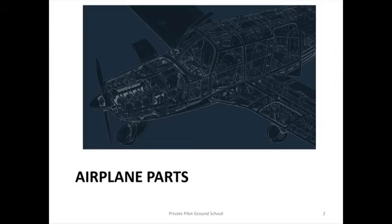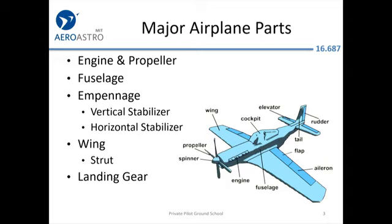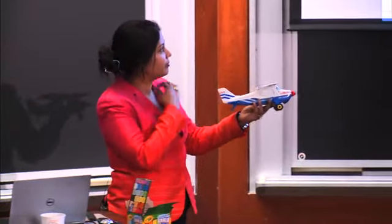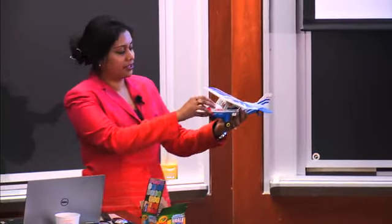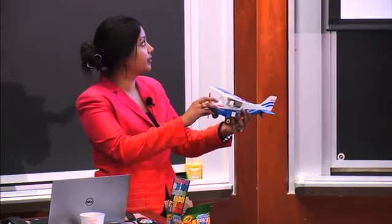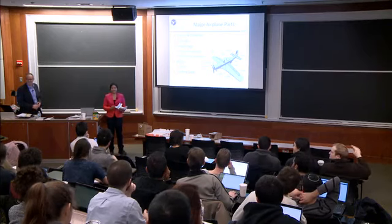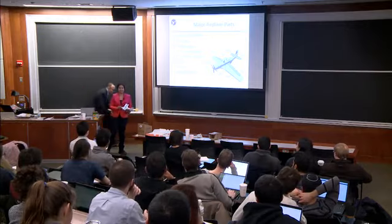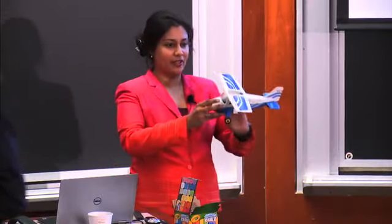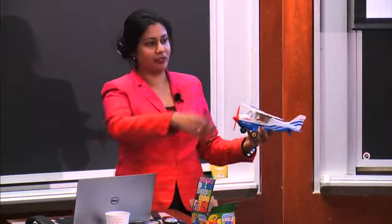So just so that we have a common vocabulary with which to discuss, we're going to talk a little bit about airplane parts. So here in my little model airplane, you can see that at the front you have your propeller, and the engine and propeller are up here at the front. The fuselage is the whole middle part where people sit — that tube in the middle — and the wings stick out the side.